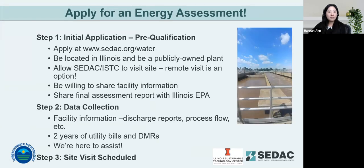It's a very simple process to apply for an energy assessment. First, you would complete an initial application on our website at cdac.org/water, where you can find the application along with our past presentations, case studies and more. To qualify, your plant has to be located in the state of Illinois and be a publicly owned plant. You also need to allow us to visit the site. We can complete the site visit either remotely or in person — this is completely up to you.